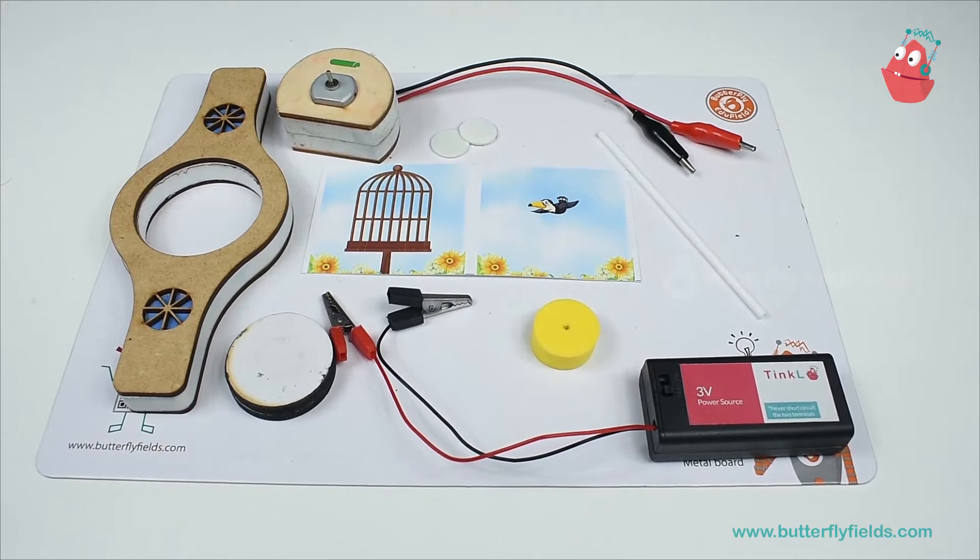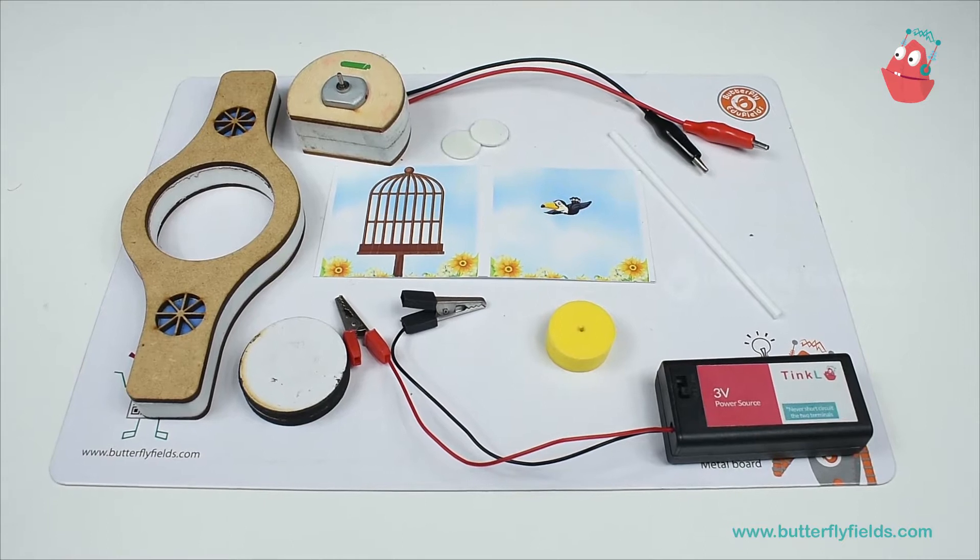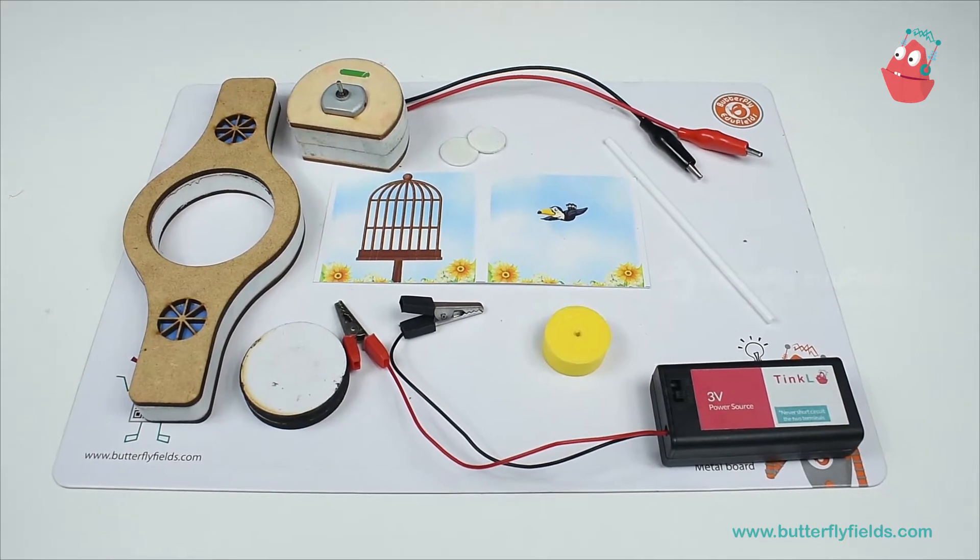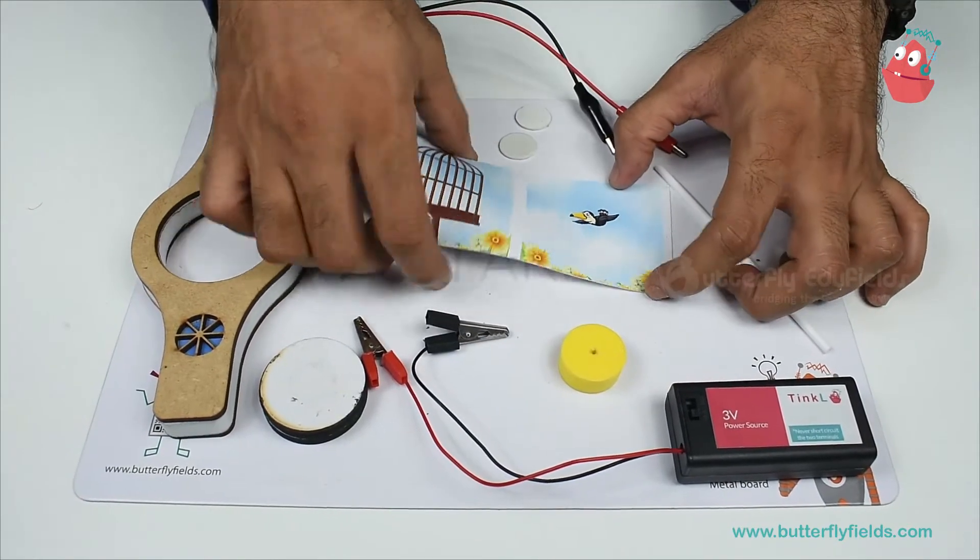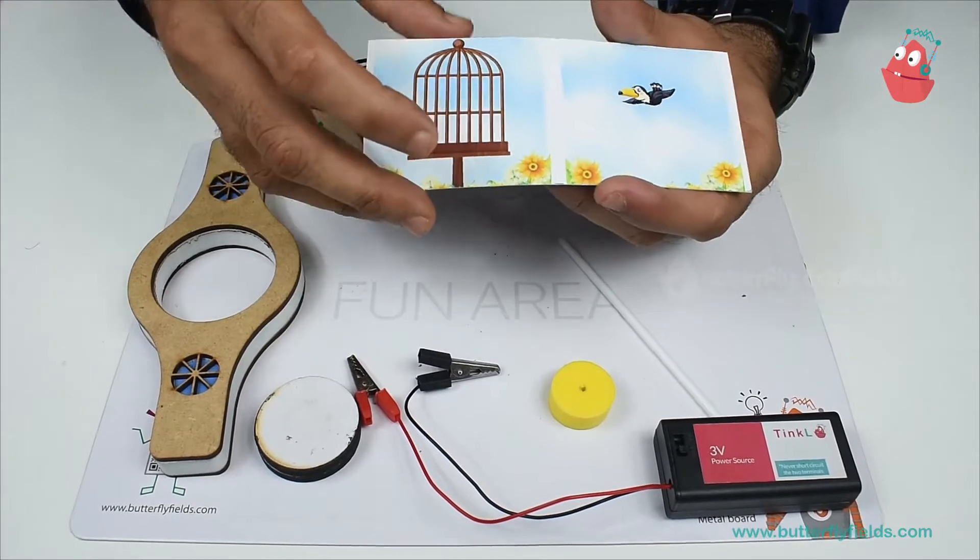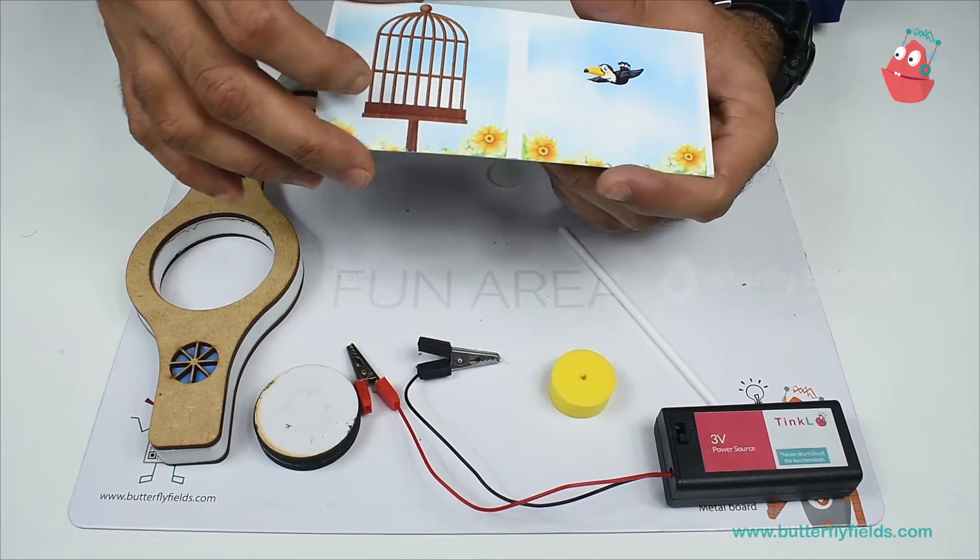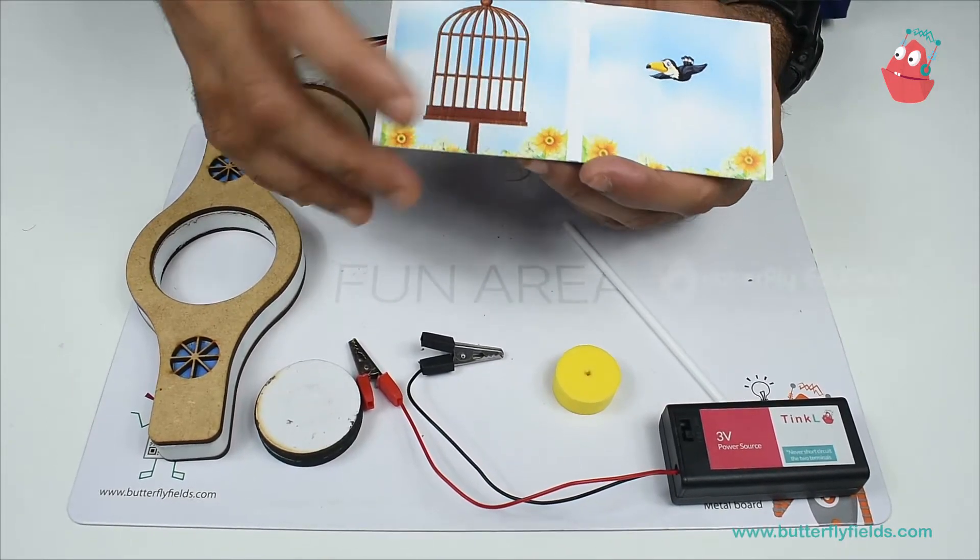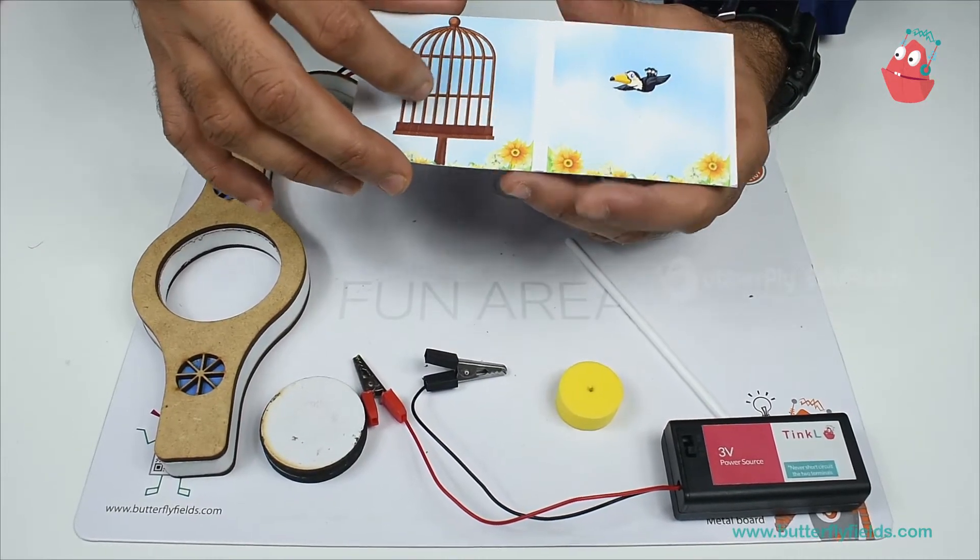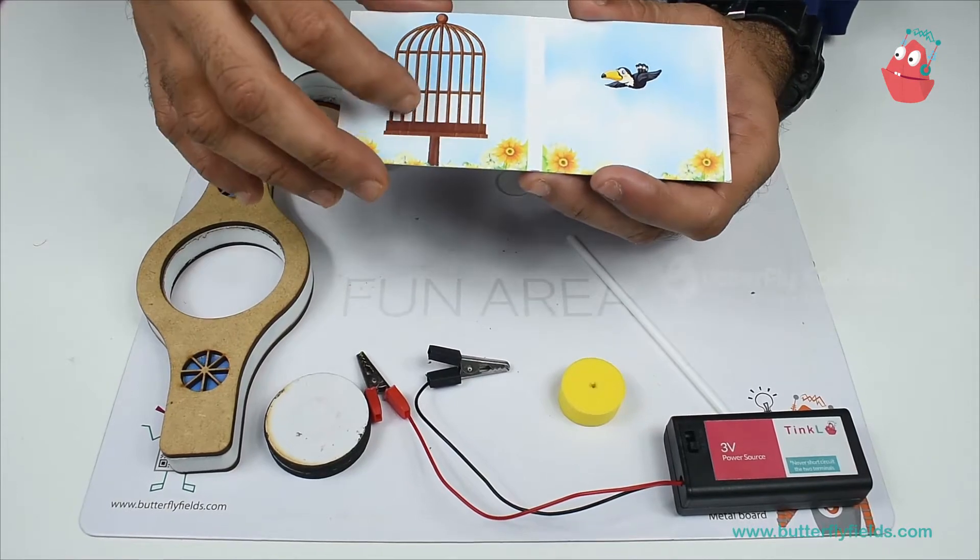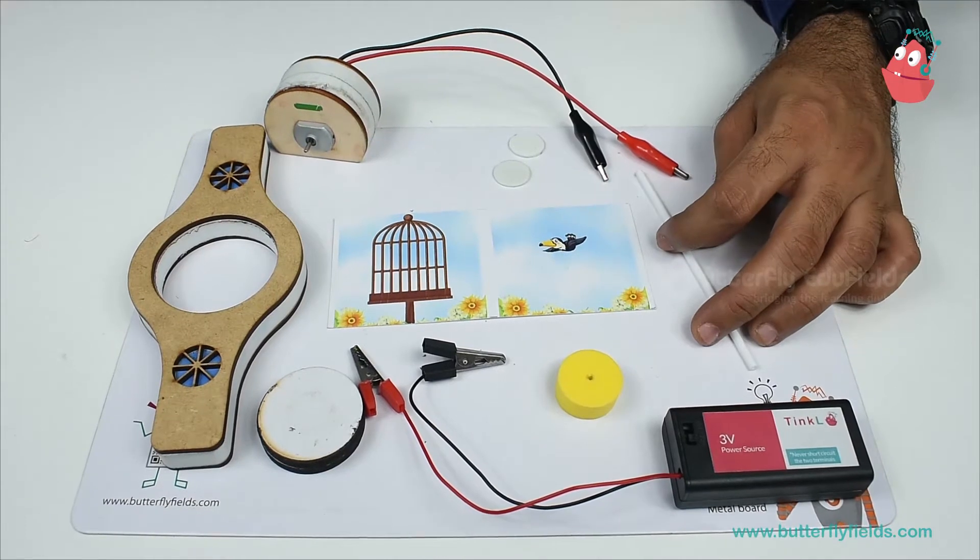Hi tinkerers! In this video, we'll do an activity related to illusion. It has good science behind it. You can see the bird and the cage here. What happens when I rotate this at high speed? This is how cartoon movies were made 30 to 50 years back. It's about persistence of vision. Let's do the activity and understand the science behind it.